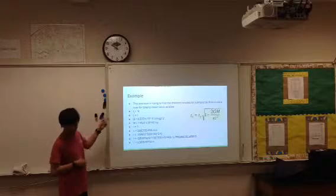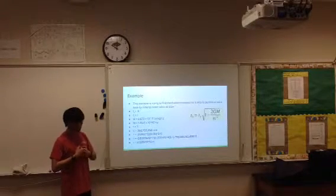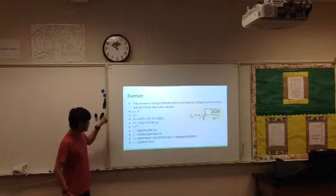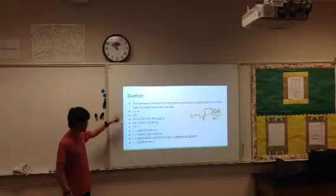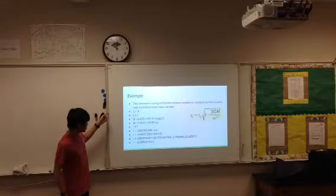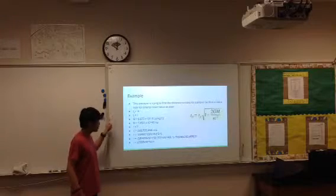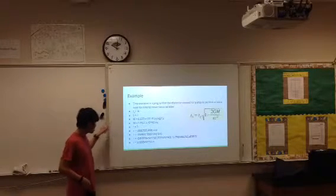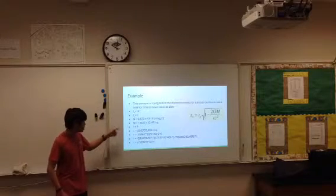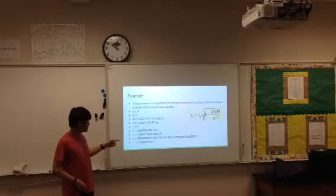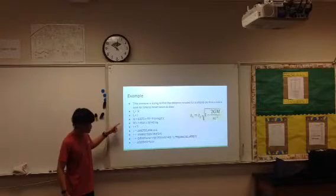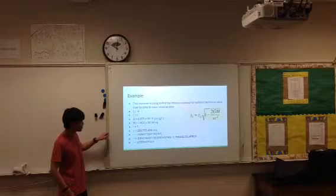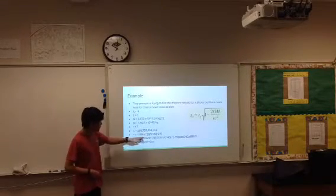So an example right here is that there's a spaceship going to a black hole. And we would want to find out what distance it would take to have time travel twice as slowly. So we would have T sub 0 equal 0.5 and then T sub f equal to 1 since T sub f is the time that we are referencing to. So the gravitational constant of the black hole would be 6.673 times 10 to the negative 11th power meters cubed per kilogram squared. And then mass of the black hole would be 1.3127 times 10 to the 40th kilograms. And we don't know what distance it would take for time to travel twice as slowly. The speed of light is 299,792,258 meters per second.